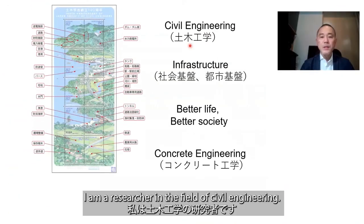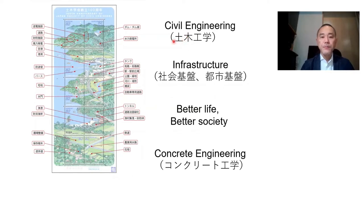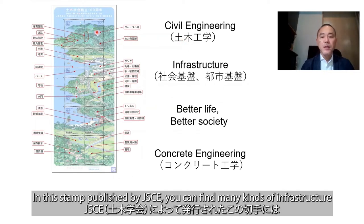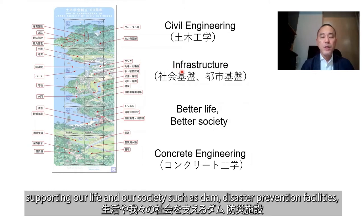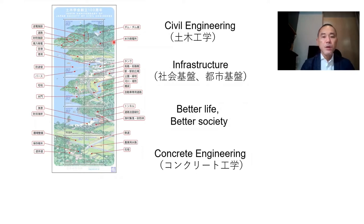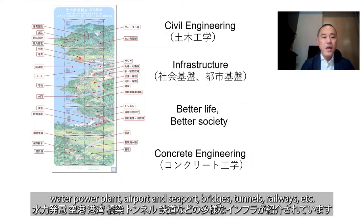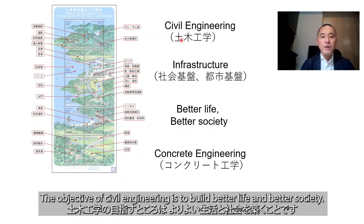In this stamp published by JSCE, you can find many kinds of infrastructure supporting life and society, such as dams, disaster prevention facilities, hydropower plants, airports and seaports, bridges, channels, railways, and more. The objective of civil engineering is to build a better life and a better society.